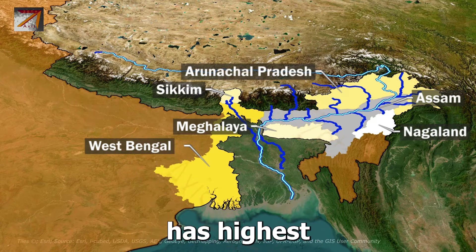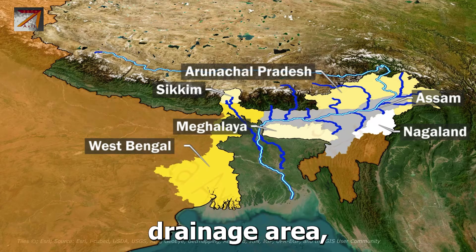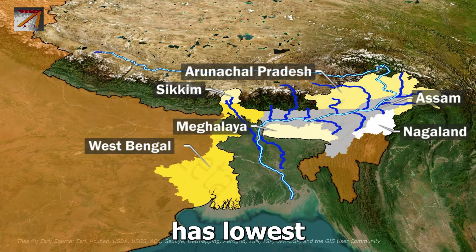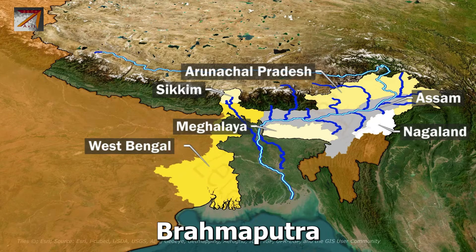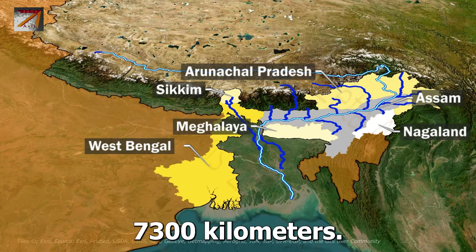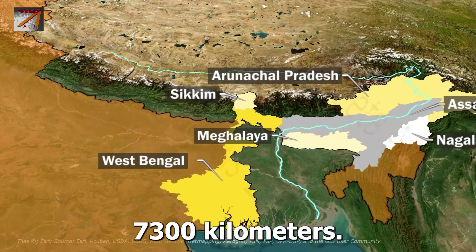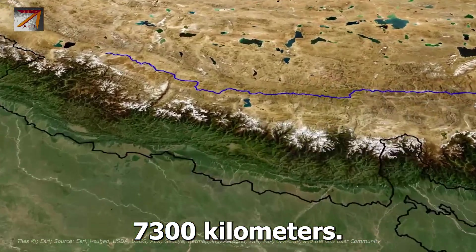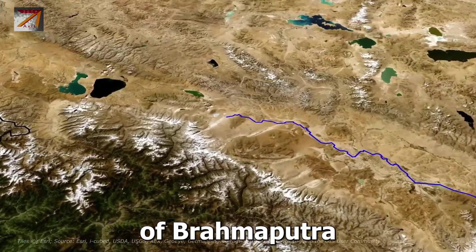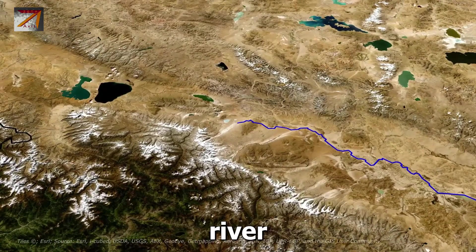Arunachal Pradesh has the highest Brahmaputra drainage area while Sikkim has the lowest Brahmaputra drainage area, covering 7300 km². Now let's discuss the course of Brahmaputra River.